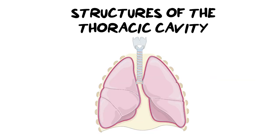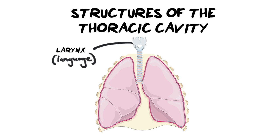As air makes its way down to your lungs it passes various structures, starting with the larynx. The easiest way to distinguish the larynx from the pharynx is that the larynx — think of the two L's as in language — is where you speak from, where your vocal cords are located, what you'd call your adam's apple. The pharynx is for food; it is the passageway where food goes back down the throat into the esophagus, and is more associated with the digestive system.